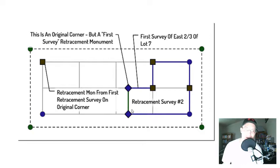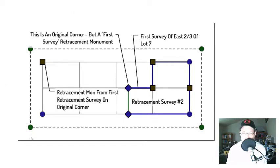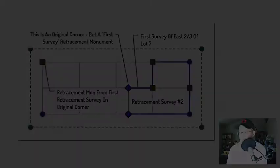That was a semi-complicated example, but hopefully it helps you get a better understanding of the concepts that Mr. Brown is talking about in chapter two of Brown's Boundary Control and Legal Principles.